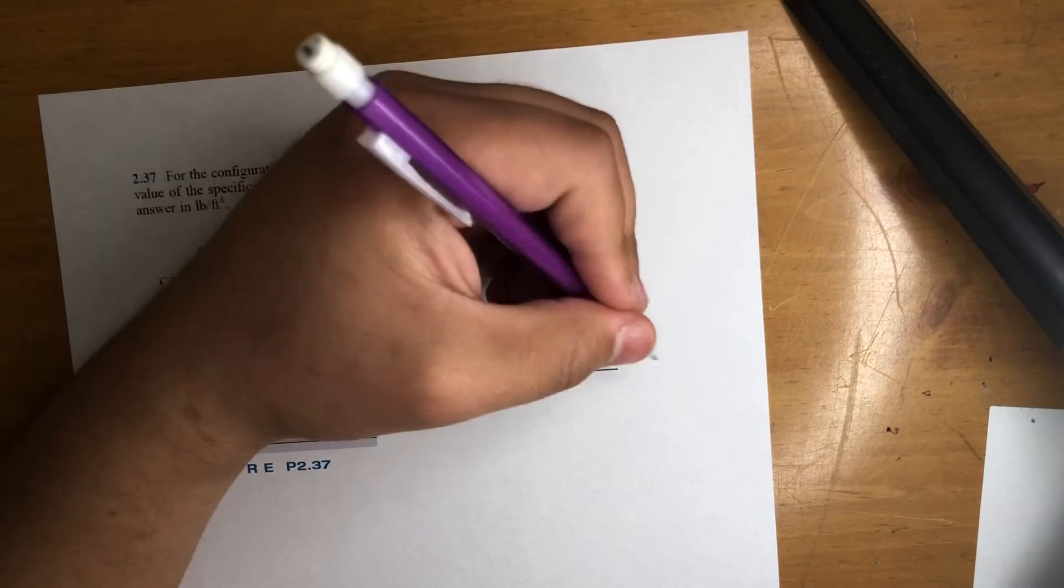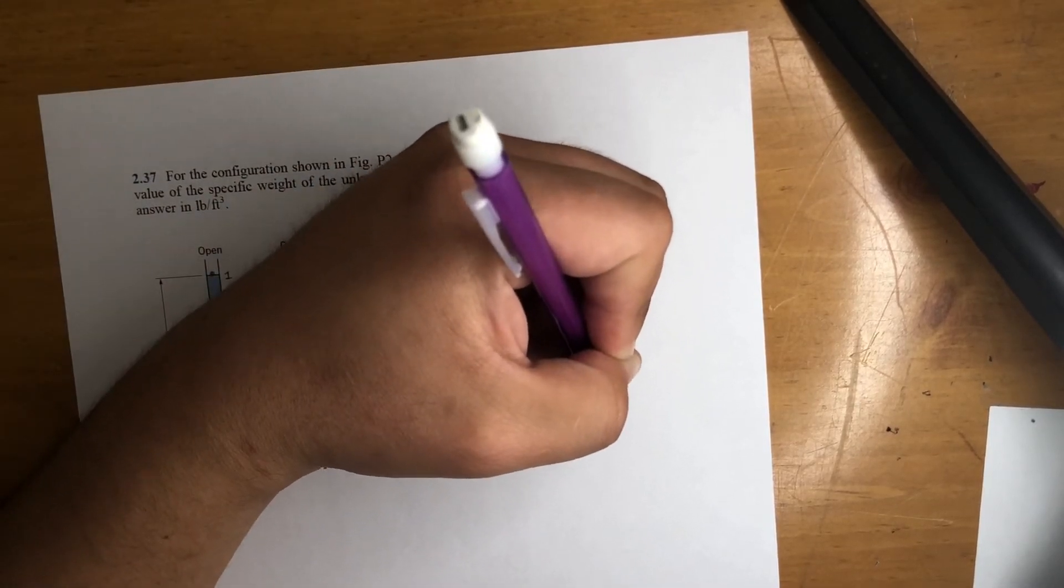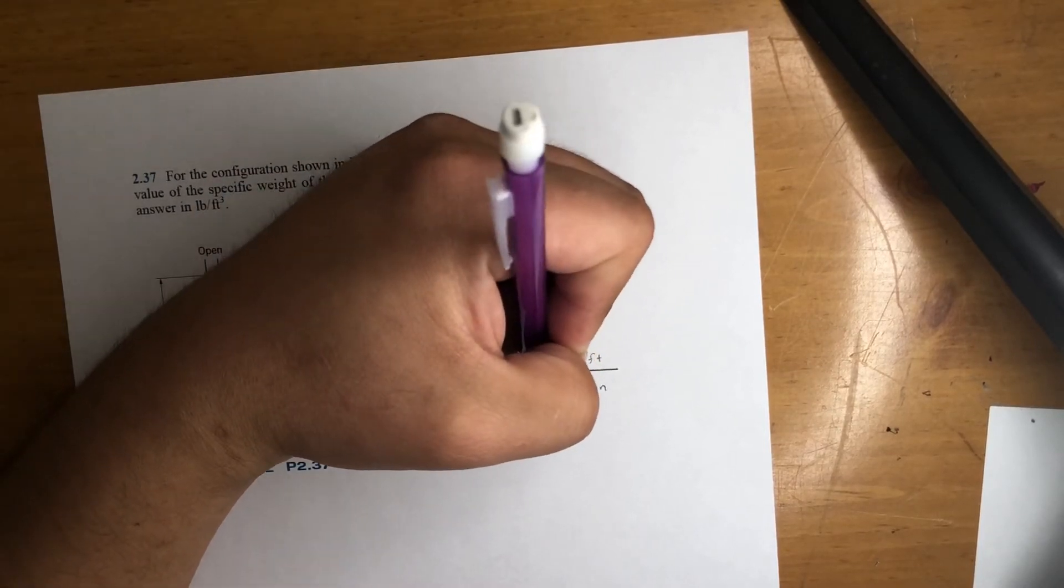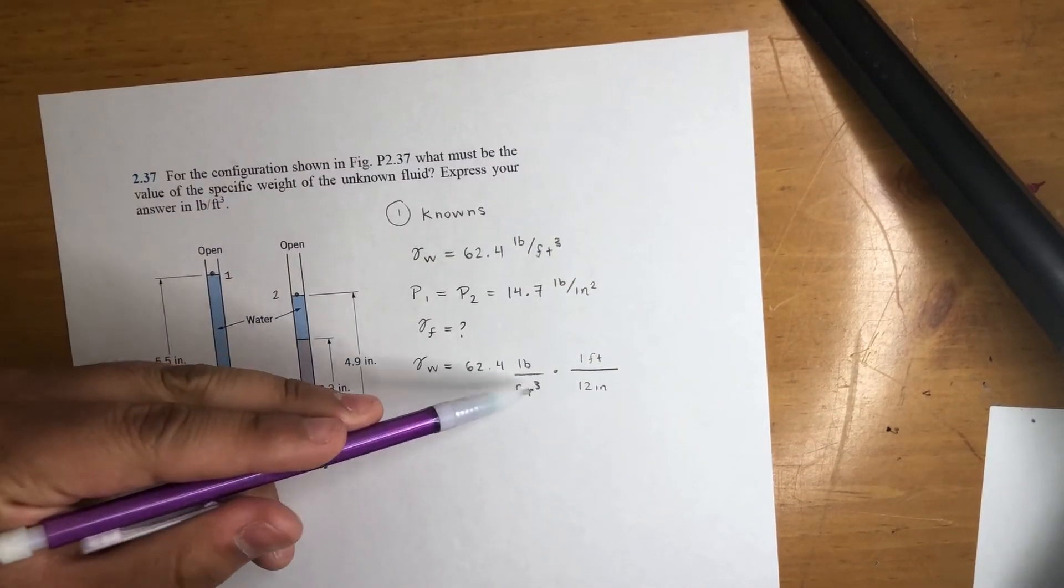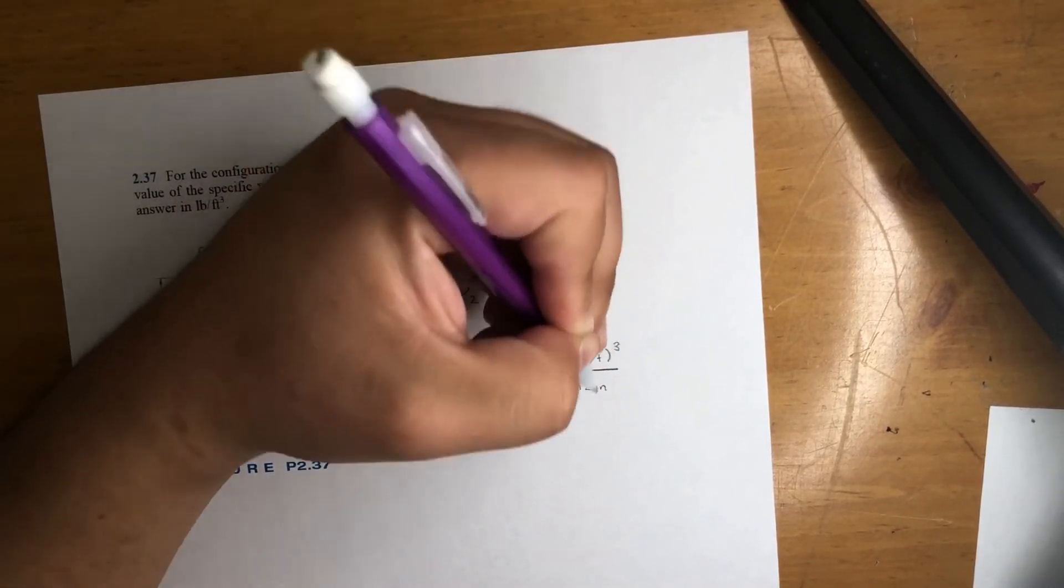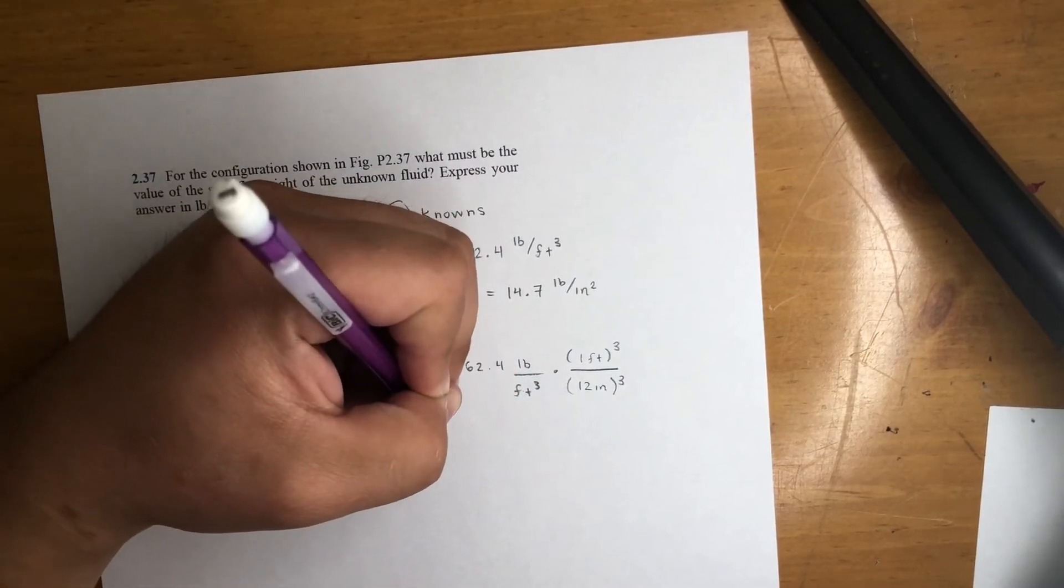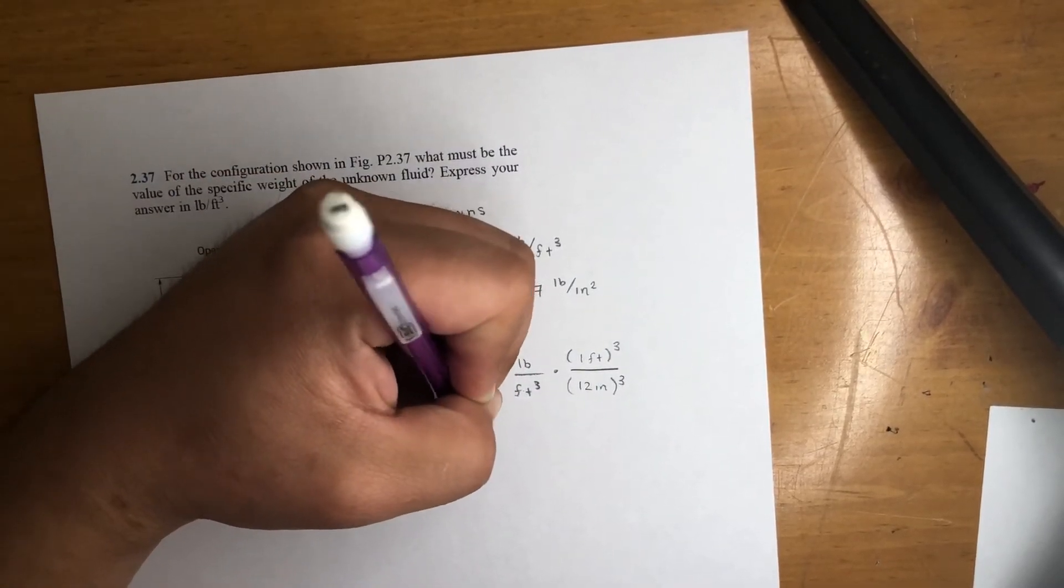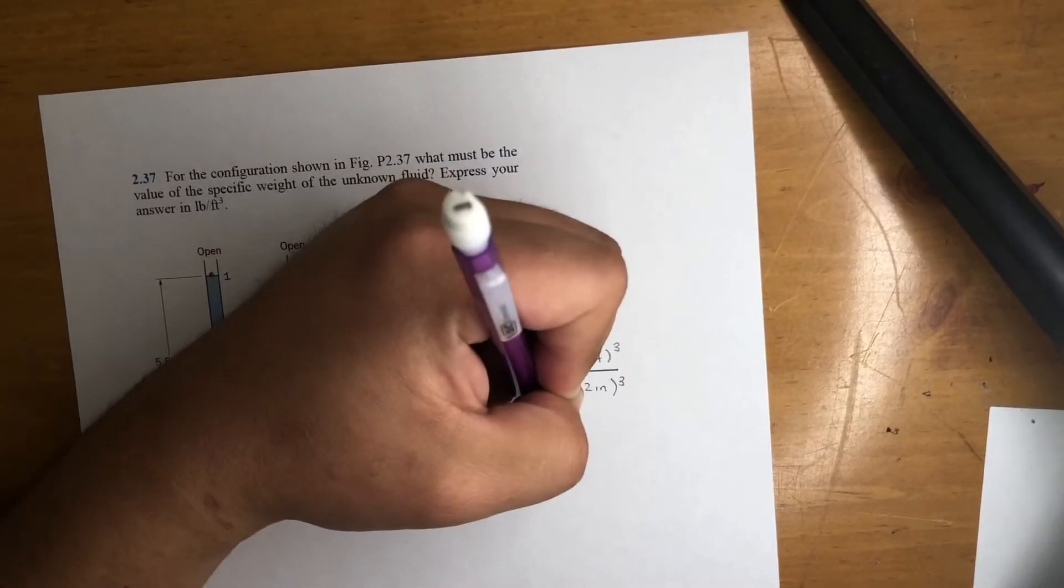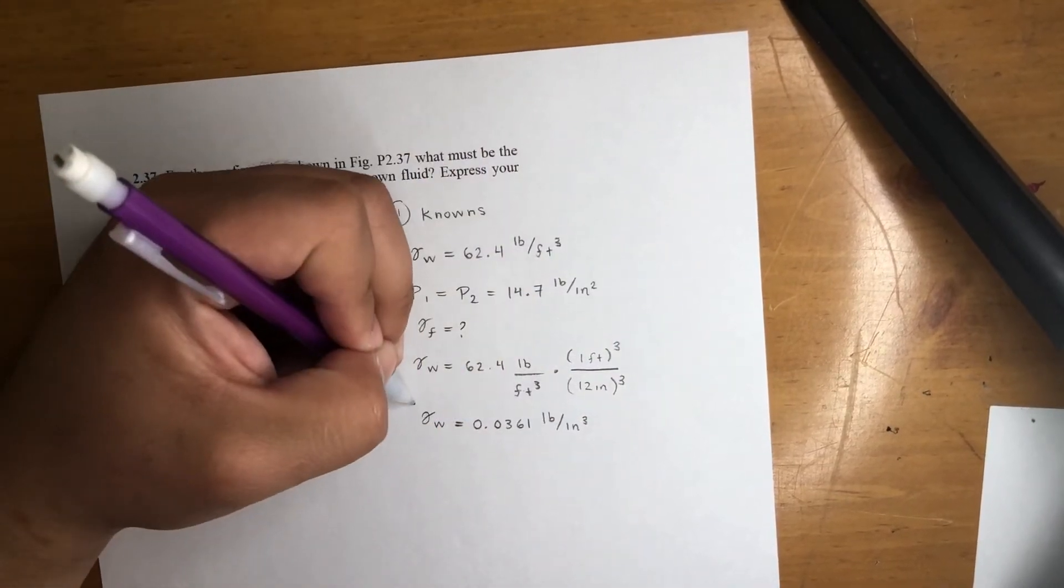So let's go ahead and do that. We got one foot up top, 12 inches at the bottom. Feet to feet, it's cubed here, it's cubed here, so we got to cube these. If you do that, gamma of water is actually equal to 0.0361 pounds per inch cubed.